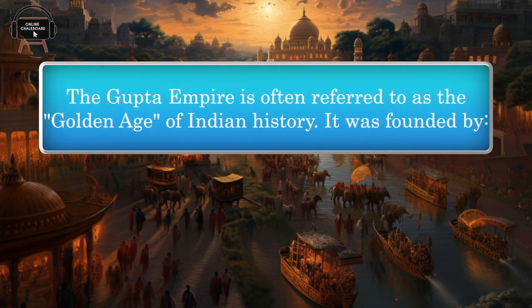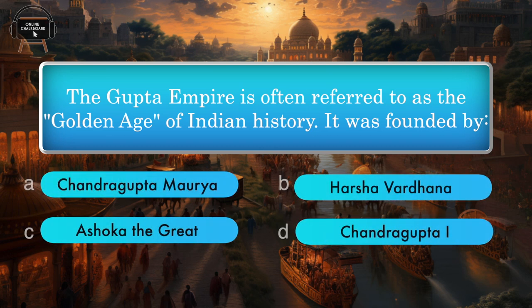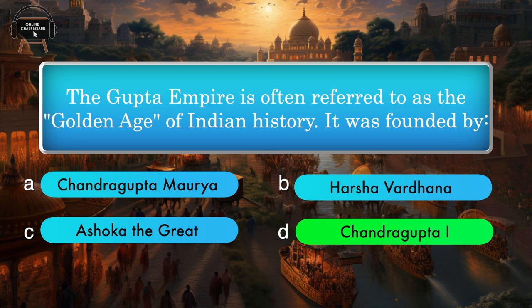The Gupta Empire is often referred to as the Golden Age of Indian history. It was founded by — Chandragupta Maurya, Harsha Vardhana, Ashoka the Great, Chandragupta I. Answer: Chandragupta I.